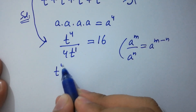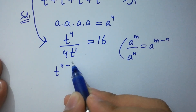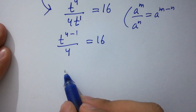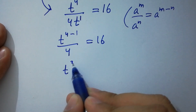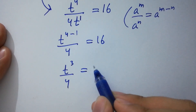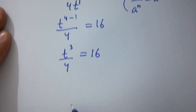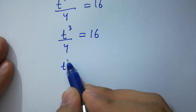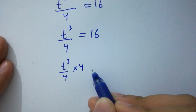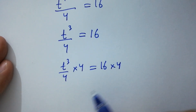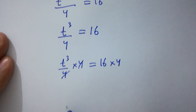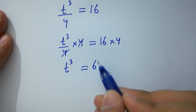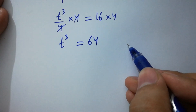Then it will be t to the power 4 minus 1 over 4 equals 16. t to the power 4 minus 1 is 3, so t to the power 3 over 4 equals 16. To cancel the 4, multiply by 4 on both sides. 4 and 4 cancel, and we get t cubed equals 16 times 4, which is 64.